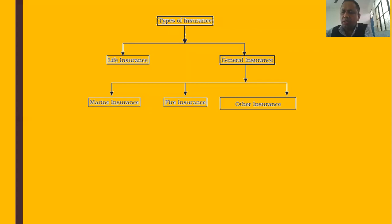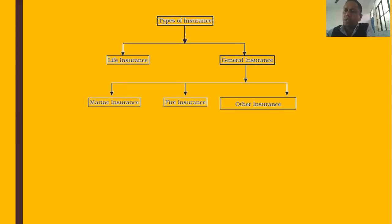There are some main elements in life insurance. First, the contract of life insurance is a contract of utmost good faith — the insured should be honest and must disclose all material facts about their health to the insurer.